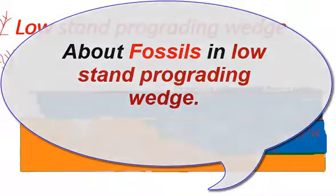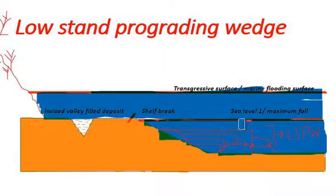When sea level rises from maximum fall, erosion at the shelf area stops, and there is direct deposition of terrestrial sediment in the form of low stand prograding wedge.